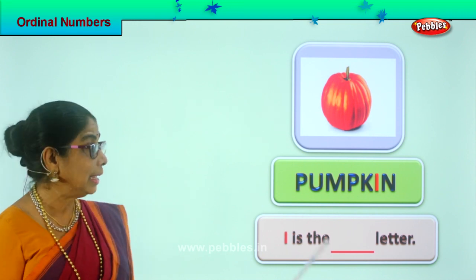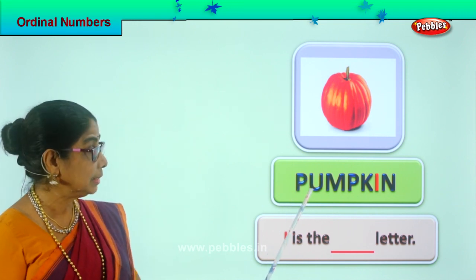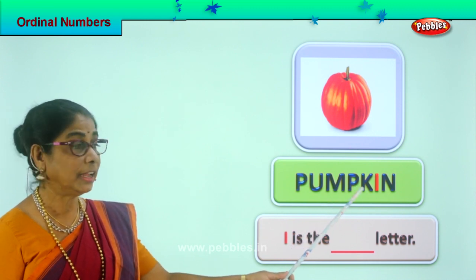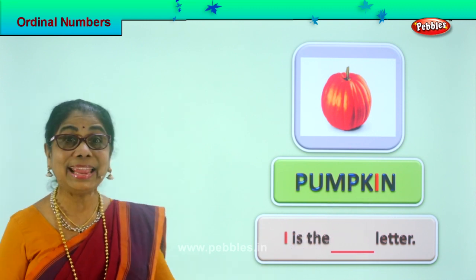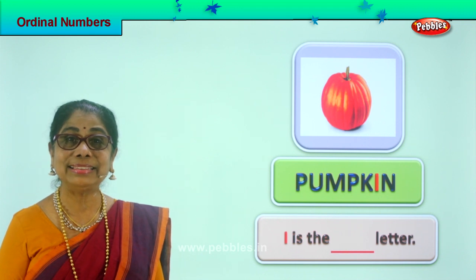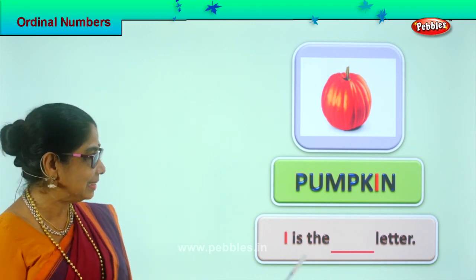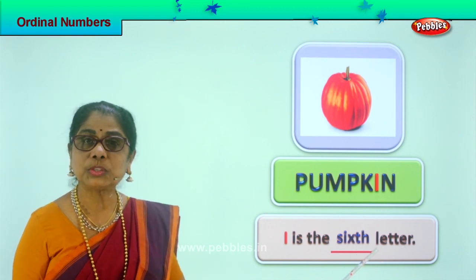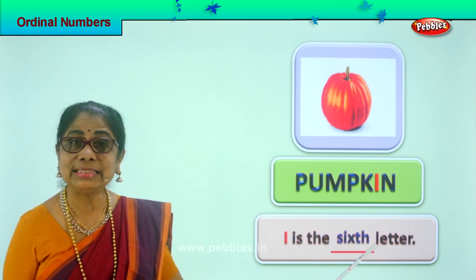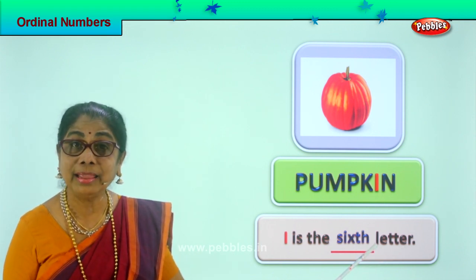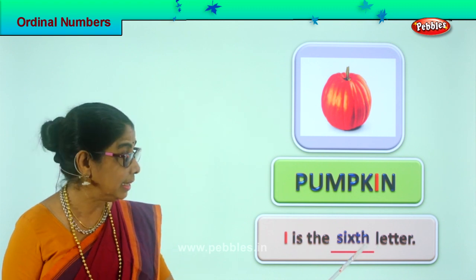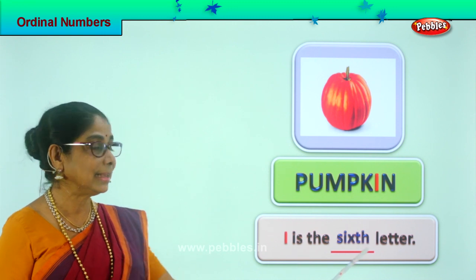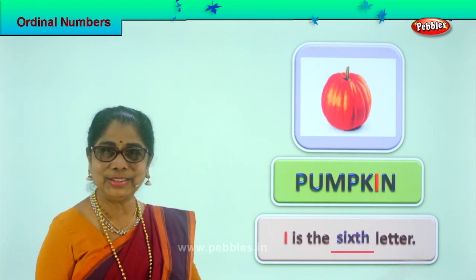Pumpkin. Now which letter is colored? I. Now we must know the ordinal position. Let's see: first, second, third, fourth, fifth, sixth — I is the sixth letter. Yes, I is the sixth letter. Spell sixth: S-I-X-T-H, sixth. I is the sixth letter. Did you enjoy?